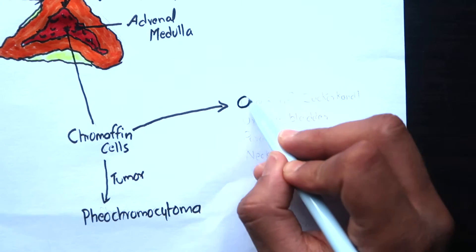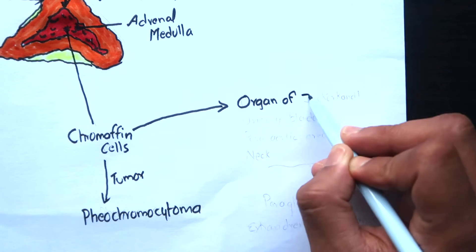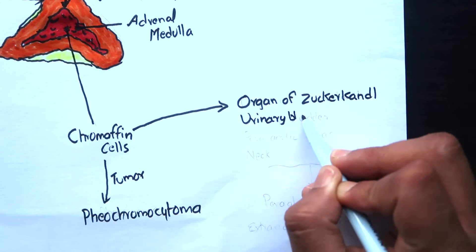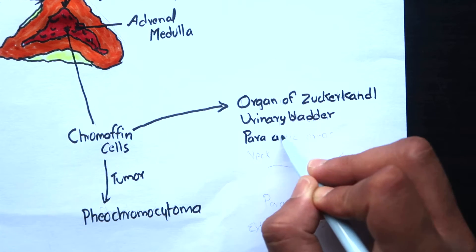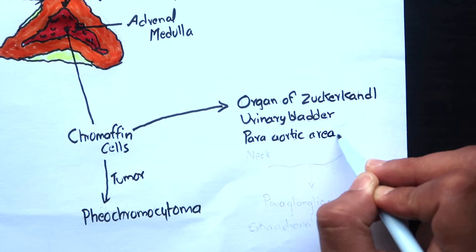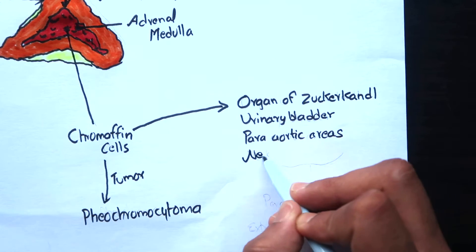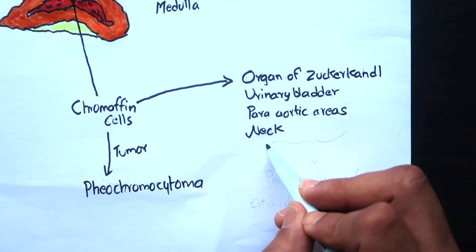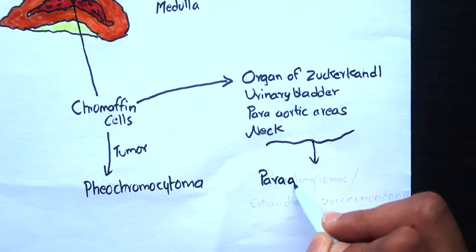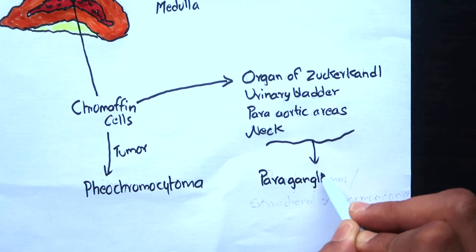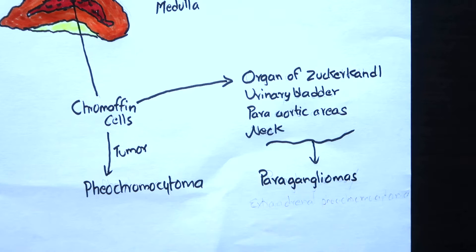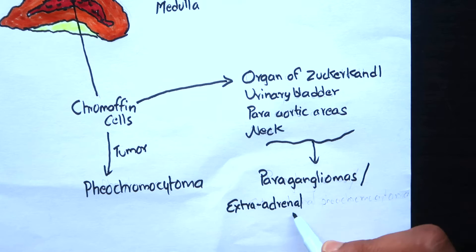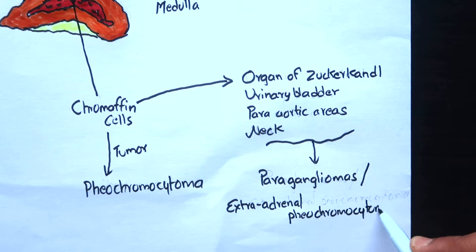The chromaffin cells are also found in other areas like the organ of Zuckerkandl, urinary bladder, paraortic areas, and sometimes in the neck as well. The tumor arising from chromaffin cells in these areas is called paragangliomas or extraadrenal pheochromocytoma.